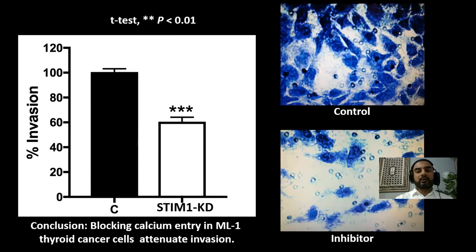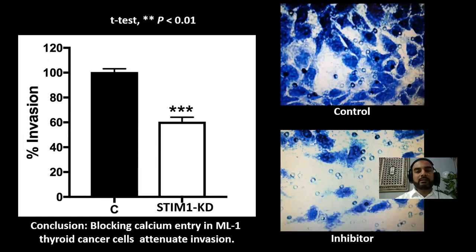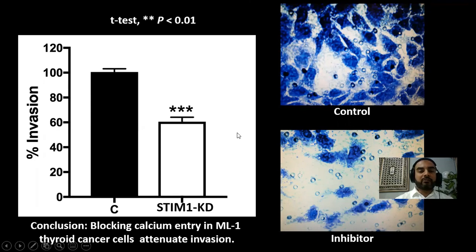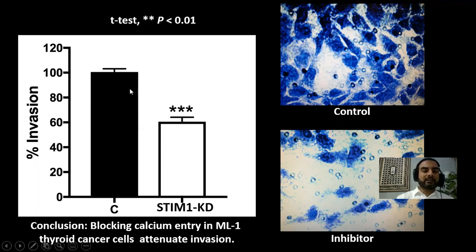After counting, we can see that in the control there are many cells, whereas in the STIM1 knockdown cells the number is significantly decreased. We normalized the counts from 10 fields and used GraphPad Prism 8 for statistics, applying a t-test — the result is highly significant. The conclusion is that blocking calcium entry into MDA-MB-231 breast cancer cells attenuates invasion.